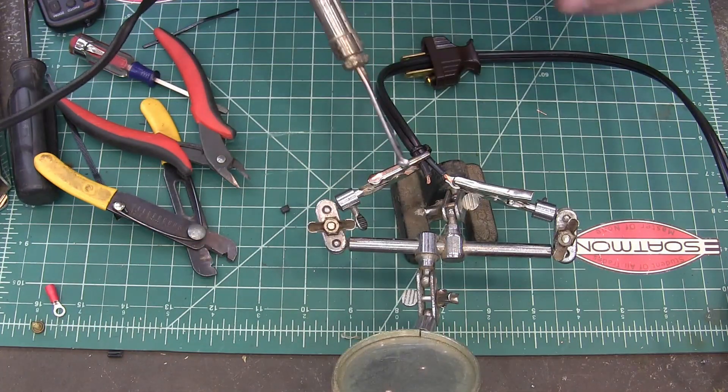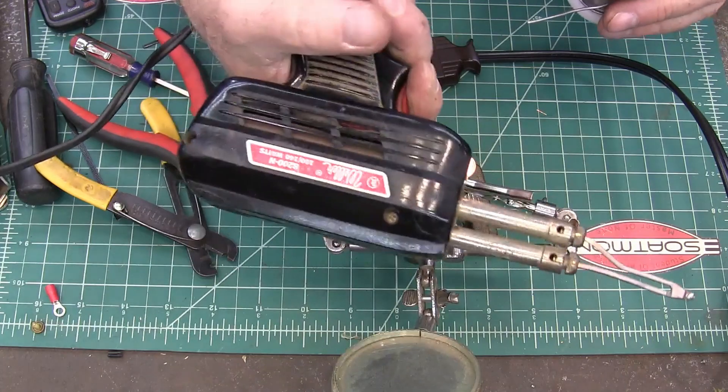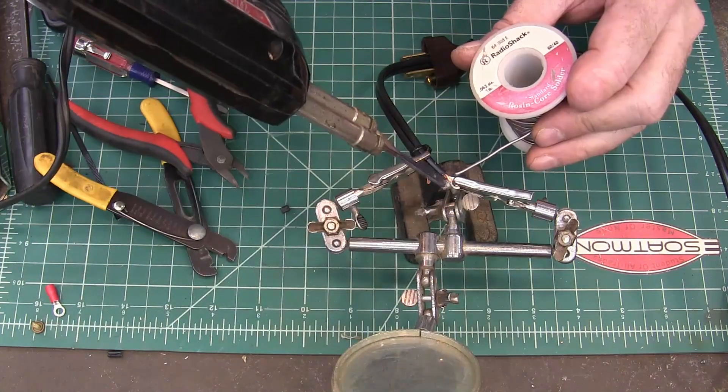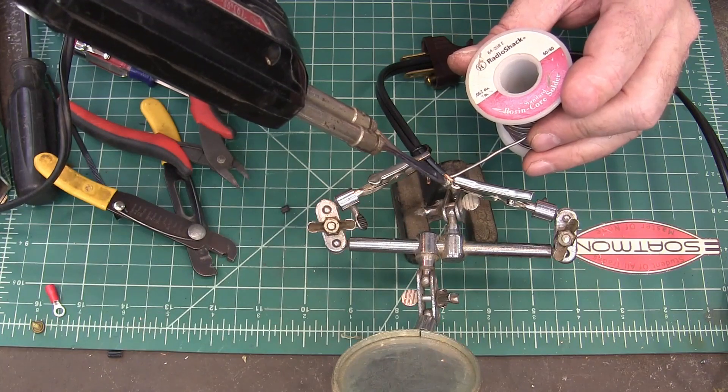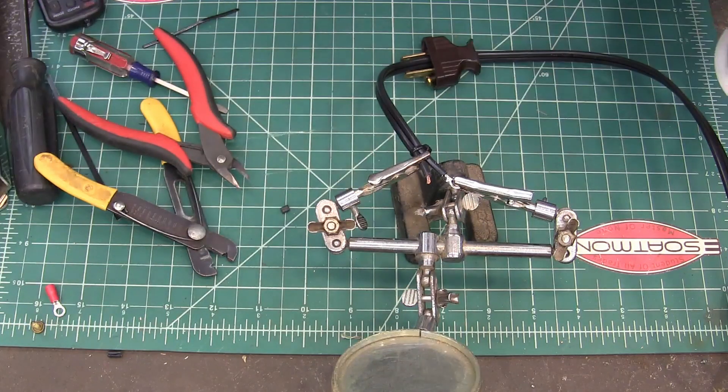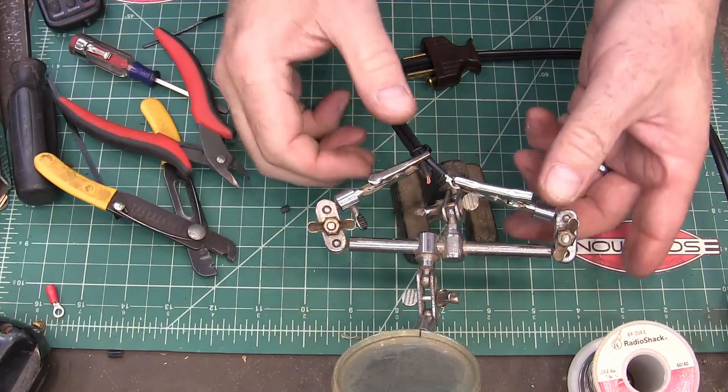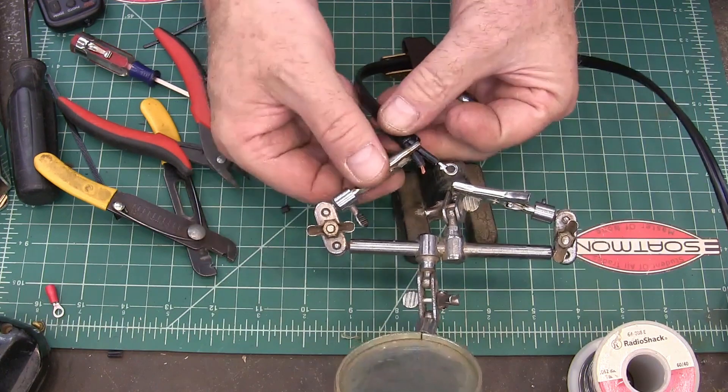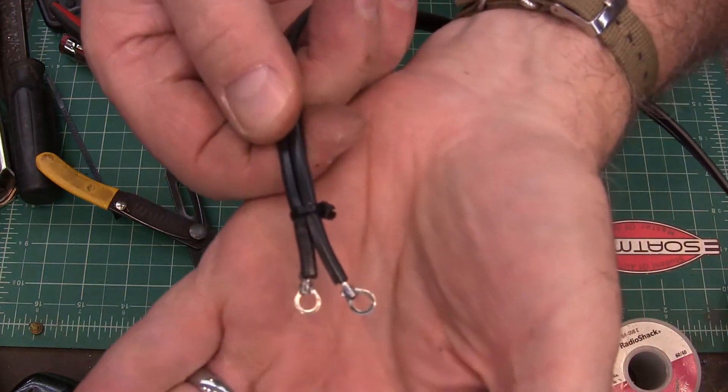It takes a pretty good-sized soldering gun. I'm using a Weller. It's an old one. It's got a lot of zip to it. Okay, that got it soldered on there nicely. And we'll do the other one. Okay, that's got my two lugs on there.